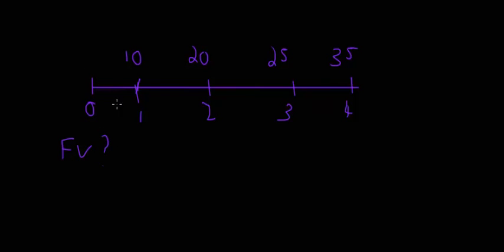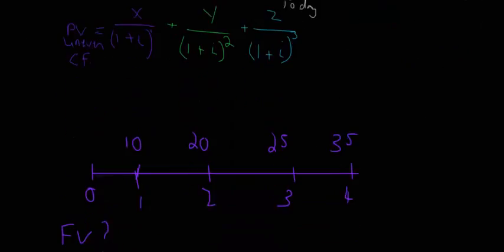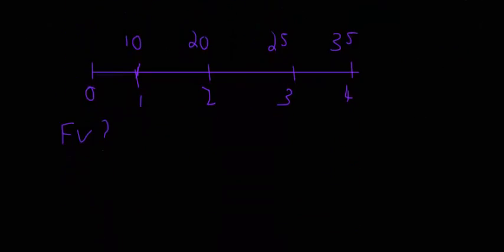When we're asking about the future value of an uneven cash flow, like we did with present values where we took all the values and snapped them back to the present, we need to get everything in the same time period. So what is the future value of this uneven cash flow?